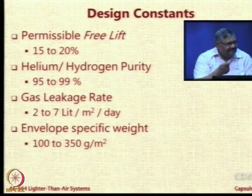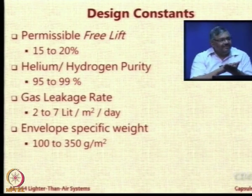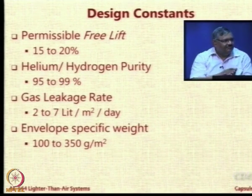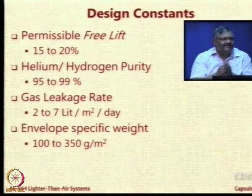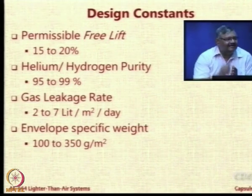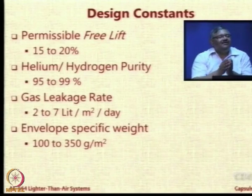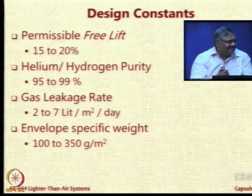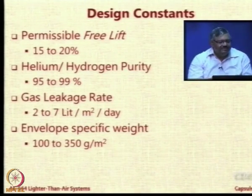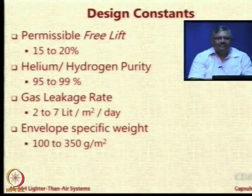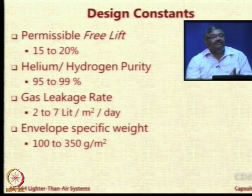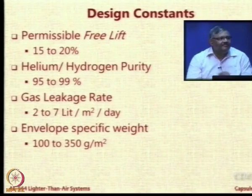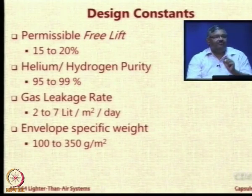Specific weight of the envelope material depends on the material — the base fabric, the number of coatings, and the kind of coatings. The value varies from about 100 GSM. If you work in an LTA lab with a very small lightweight indoor aerostat you can even use thinner material of 50, 60, or 70 GSM, but most practical numbers would be between 100 GSM and around 350 GSM. More than 350 GSM is very heavy fabric, but some fabrics used by ADRD Agra for very large aerostats are 350 GSM.